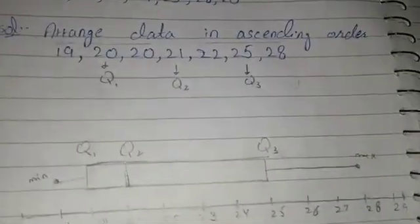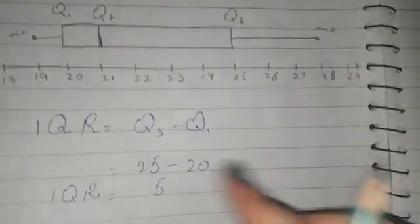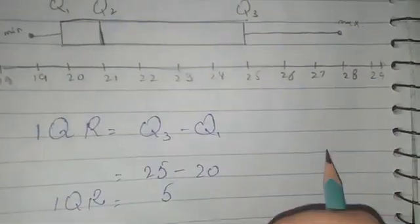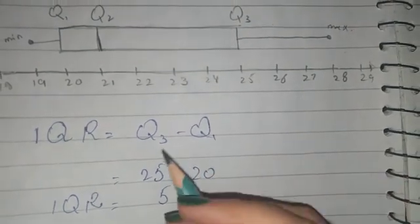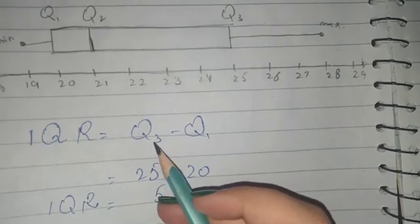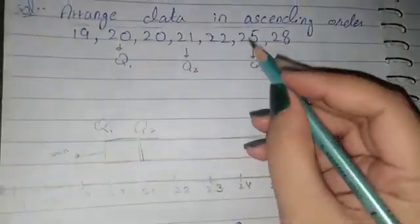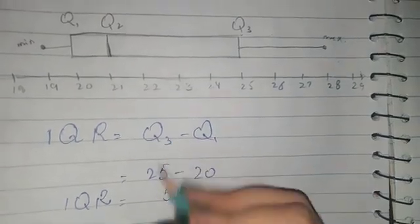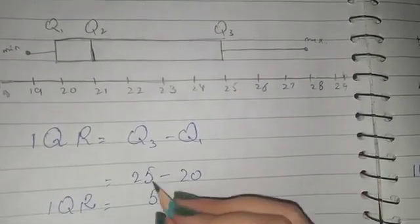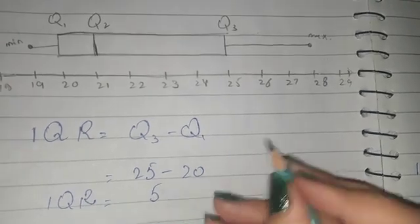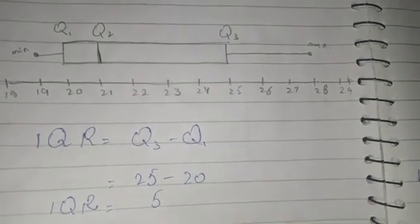Now we find the interquartile range. The formula is IQR = Q3 minus Q1. Q3 is 25 and Q1 is 20, so we calculate 25 minus 20, which equals 5. So the interquartile range is 5.